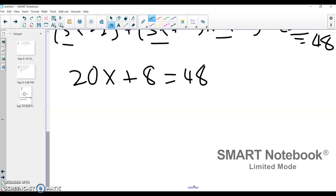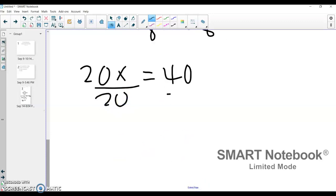Now, working the algebra, you can subtract 8, and so you get 20x equals 40. You divide both sides by 20, and you get x equals 2.